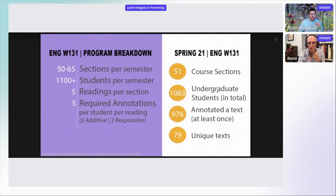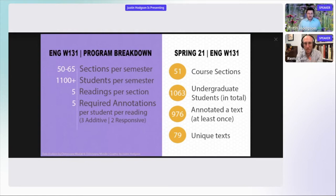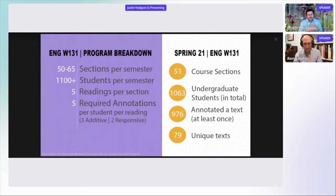We also want to look closely at how the social part of social annotation is being enacted. For spring 2021 data, we had 51 course sections with 1,063 students enrolled. Of those, 976 annotated at least one text — across 79 unique texts across the different courses. Further within that, at least 23 of the courses had three or more shared texts, and four course readings were shared in more than 10 sections. There's just an incredible layering of information that we're trying to process, because these readings come in at different times and different places in the curriculum.